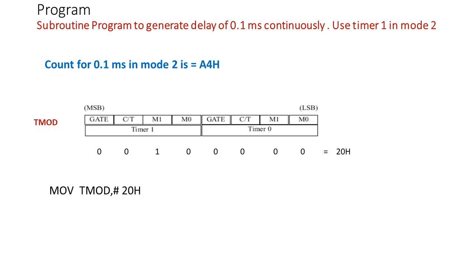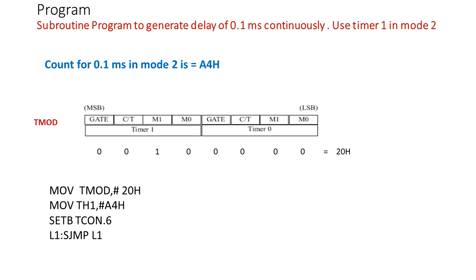Writing the program: the first instruction initializes the TMOD register by storing 20H. The second step loads the count A4H into the TH1 register since we are using Timer 1. Then we start Timer 1 by writing the instruction: SETB TCON.6. After this, we write SJMP L1 so it continuously executes that instruction while the timer continues counting. To stop the timer at any time, we write CLR TCON.6.